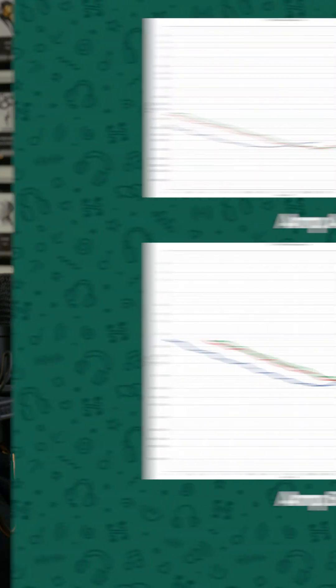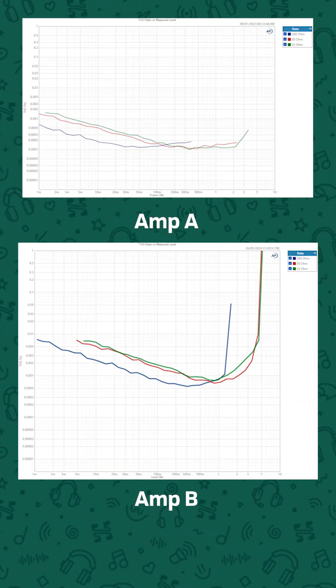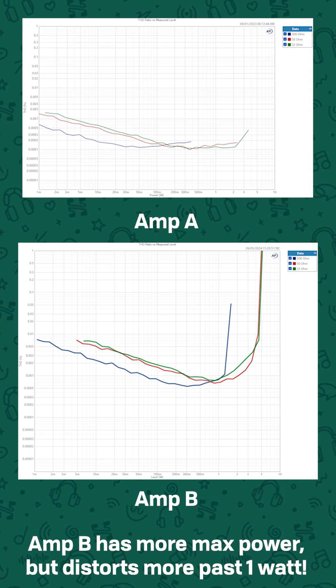So instead of just looking at the maximum power spec for an amplifier, what you actually want to do is check the measurements and look at the distortion versus output level graph. This tells you how that amplifier is going to be behaving with higher output levels up to its maximum. With this information, you can check not just what the absolute maximum the amp can output without failing, but also whether it will actually be able to cleanly deliver the amount of power that you need.